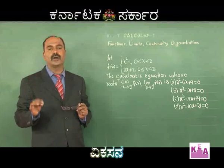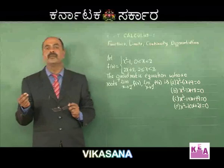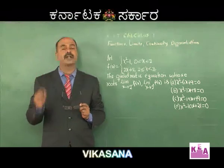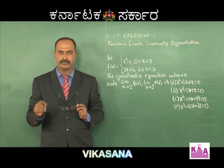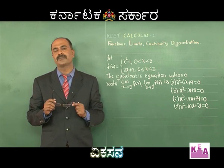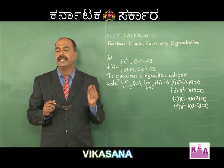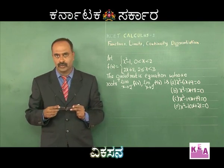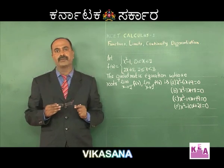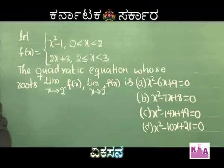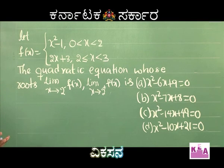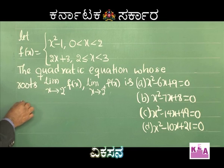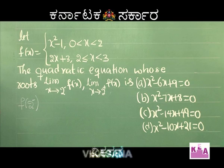This problem is a mixture of limits and quadratic equations. Limit x→2⁺ means for values slightly greater than 2, so we use the second piece. Limit x→2⁻ means for values slightly less than 2, so we use the first piece. This concept you would have studied in school or in 12th standard.